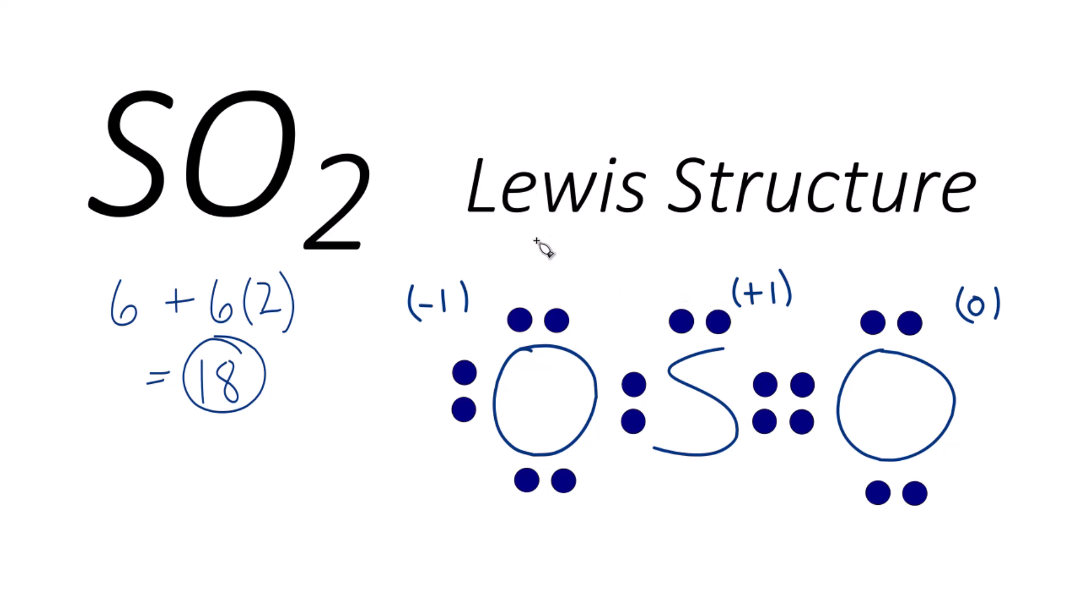So why don't we form another double bond, like this. And now we have eight for the oxygen, eight for this oxygen, and we have 10 here for the sulfur, but sulfur can have an expanded octet. It's in period three on the periodic table. Period three and below, they can have expanded octets.